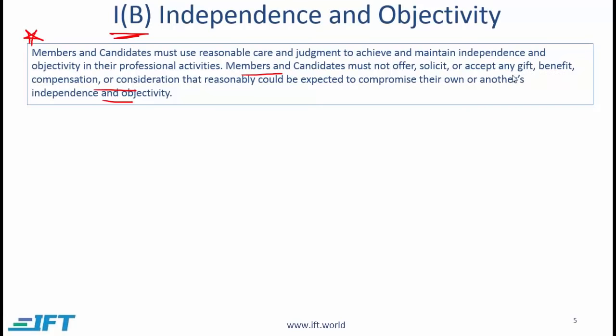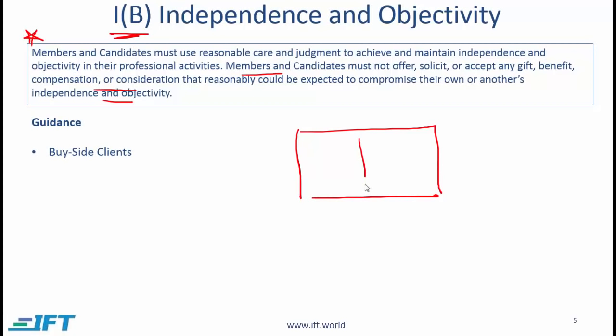Let's now look at the guidance — the different situations and circumstances where independence and objectivity might be compromised. To help understand this, let's create a scenario. Say you work in the research department of a large brokerage firm that also has an investment banking department. You are in the research department writing reports on large pharmaceutical companies, evaluating them and making recommendations as to whether investors should buy, hold, or sell the stock.